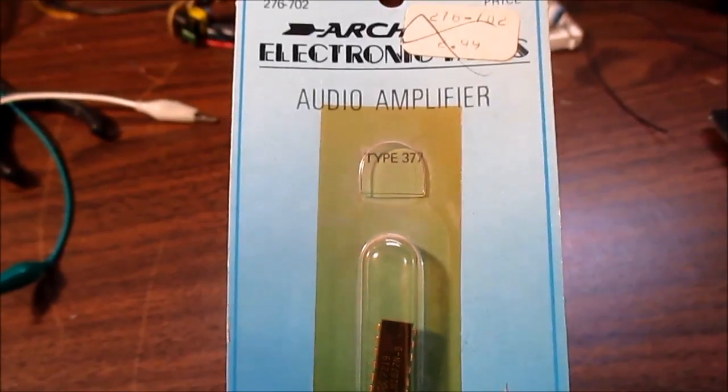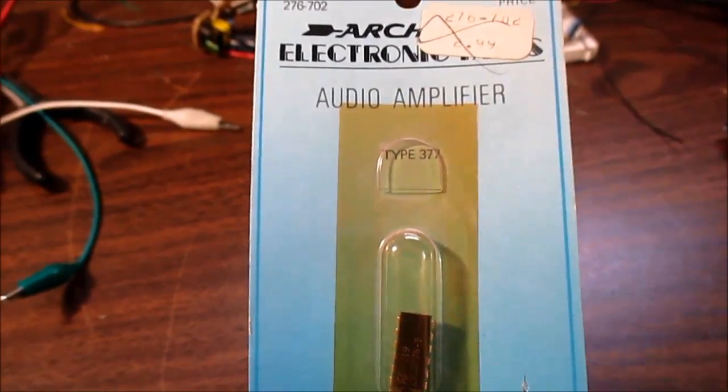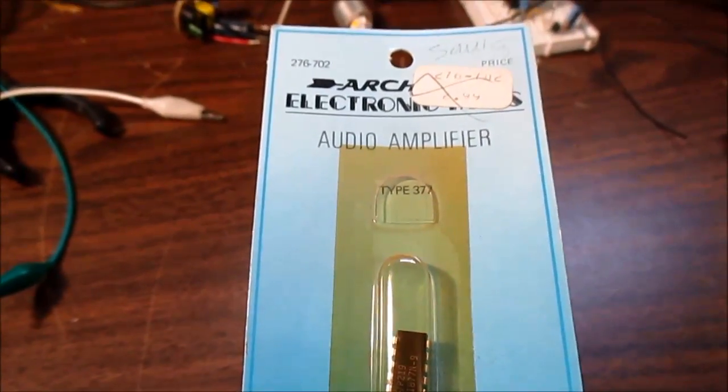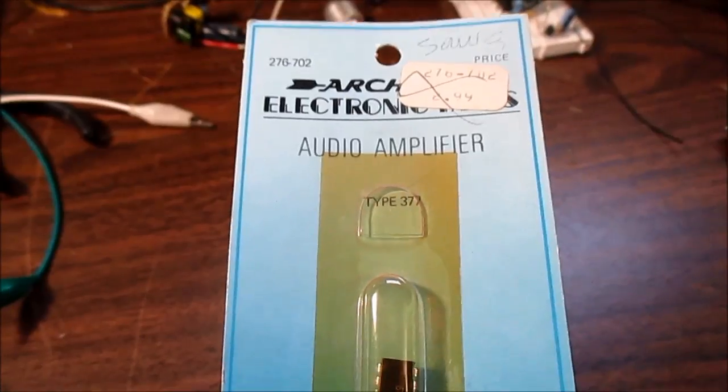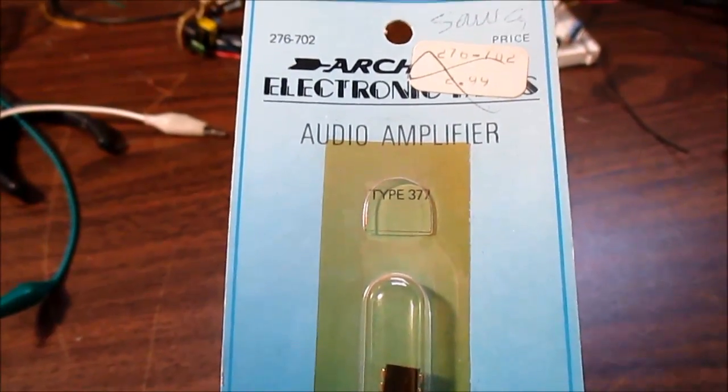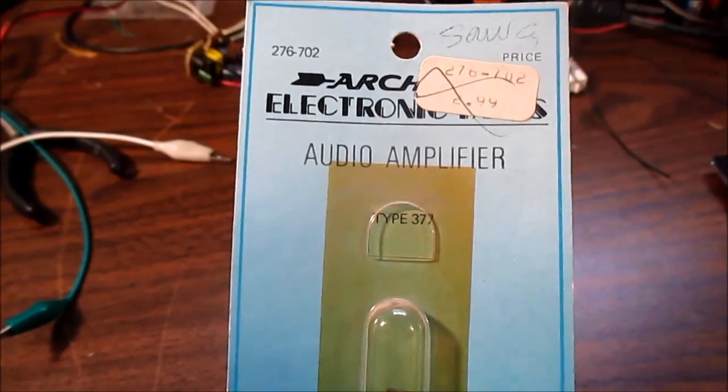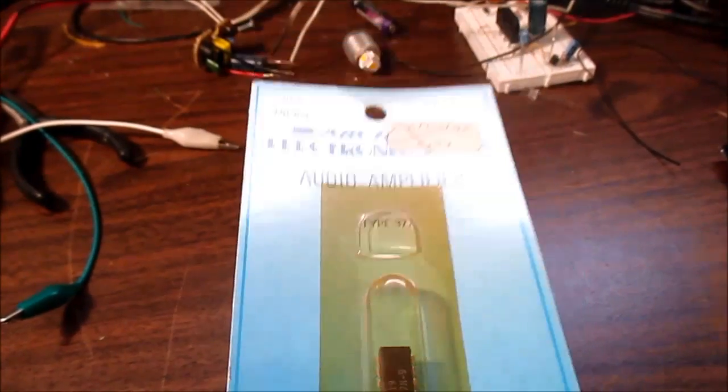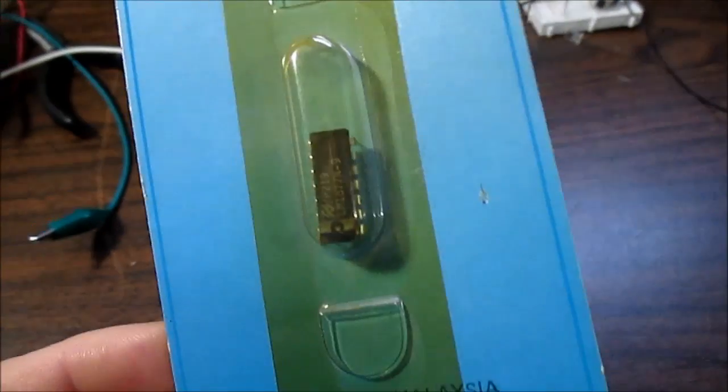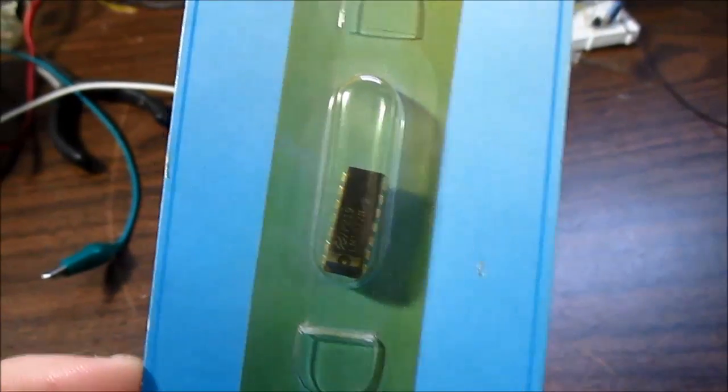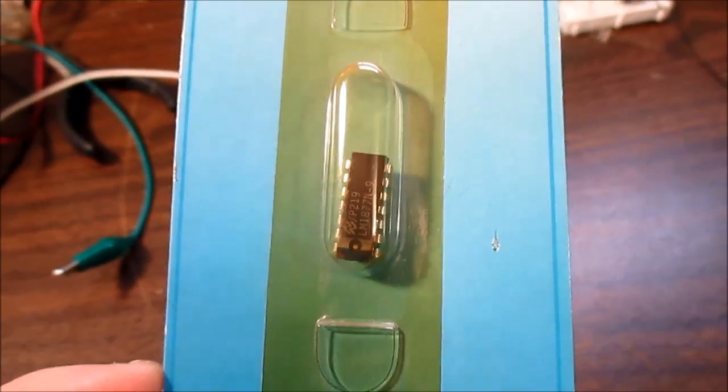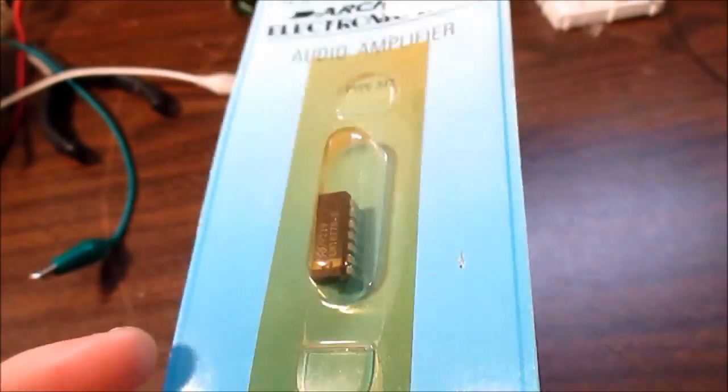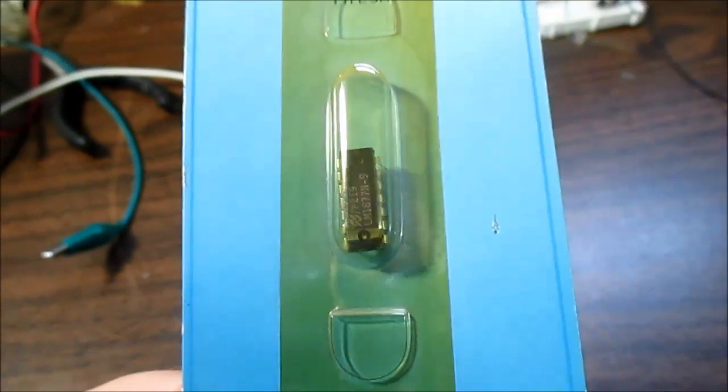The LM1877 started out as LM377 and I don't know what happened. I don't know if there was a minor improvement made or they just renamed them. Sometimes National Semiconductor renamed some of their parts. But sometime in the mid seventies, they decided to call it the LM1877. It's what I call a second generation chip because it has built-in thermal protection and short circuit protection. Internally compensated. It's a pretty neat little chip.